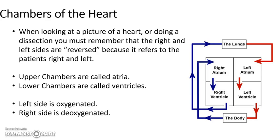Once blood goes to the lungs, it becomes oxygenated and is shown as red in diagrams. Think of when blood comes out of a vein and it looks red — that's because it's hit oxygen, turning more red than a deep purple-ish blue. The upper chambers of the heart are called the atria, and the lower are called the ventricles. You can think of alphabetical order: A is at the top, V is at the bottom. The left side is oxygenated; the right side is deoxygenated, shown with red and blue colors.